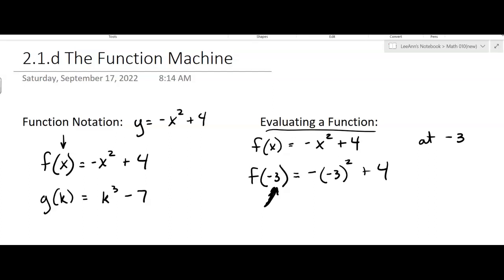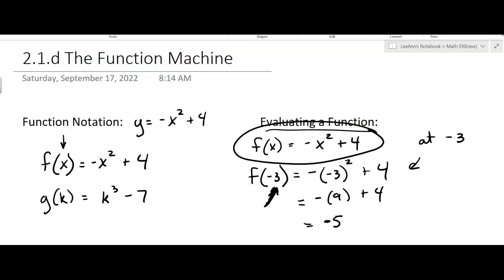Then in this case we actually have to do the math. So I get the opposite of nine plus four, which is going to be negative five. So what that means is if I take my function that I have right here and I want to evaluate it at negative three, I get an output of negative five.